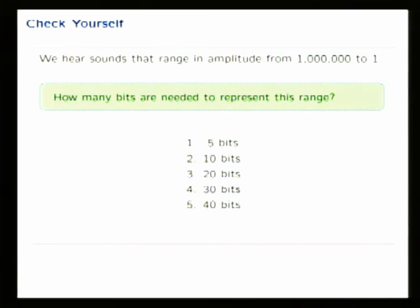To illustrate the number of bits needed, consider sound. You can hear sounds that range in amplitude over about a million to one. If you put a person with good ears in a quiet room, adapted, and played the faintest audible sound, then multiplied the pressure by 10 six times over, you could make it a million times more intense before it would start to hurt — about 8 million before it would start to damage.